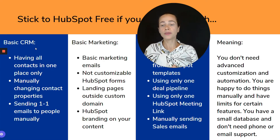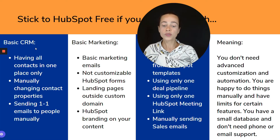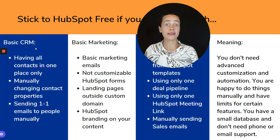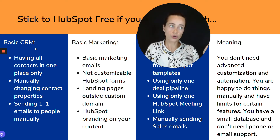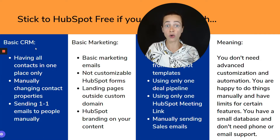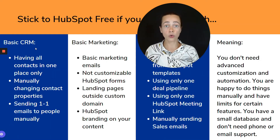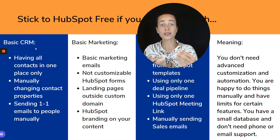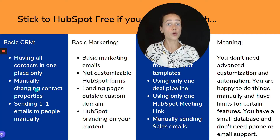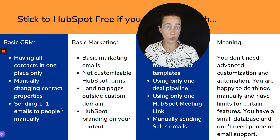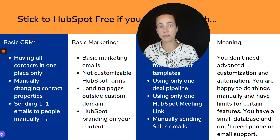Stick to free if you're happy with manually changing contact properties — for example, marketing status, which determines who you can send marketing emails to. You can do this the automated way by creating a workflow, or the manual way by selecting contacts, clicking 'set as marketing contacts,' and doing this periodically. With a HubSpot free account, you cannot automate things, so everything has to be manual — including sending emails.